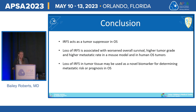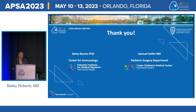In conclusion, IRF-5 acts as a tumor suppressor in osteosarcoma. The loss of IRF-5 is associated with worsened overall survival, higher tumor grade, and higher metastatic rate in both mouse models and human osteosarcoma tumor samples. Loss of IRF-5 in tumor tissue may be used as a novel biomarker for determining metastatic risk or prognosis in osteosarcoma. I'd like to thank my lab and the Department of Pediatric Surgery at Cohen's and my mentor, Dr. Sofer.